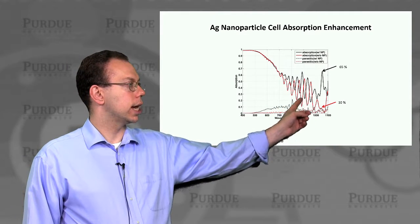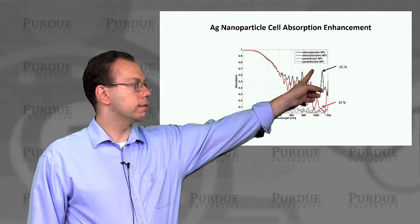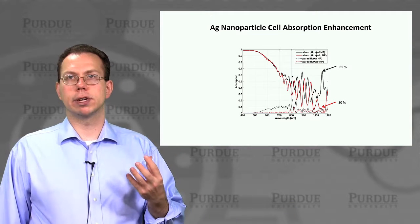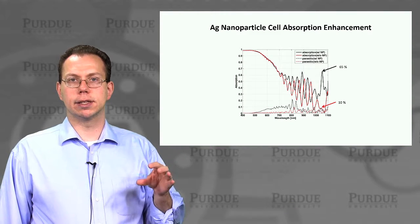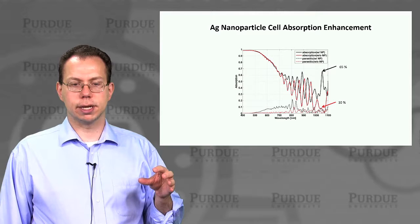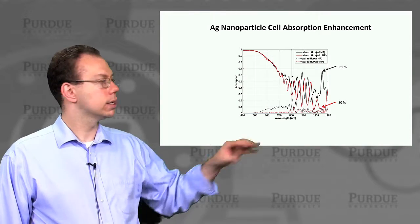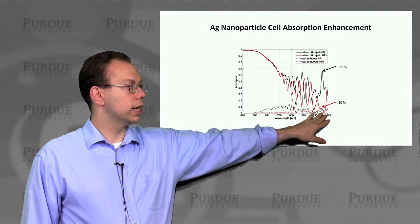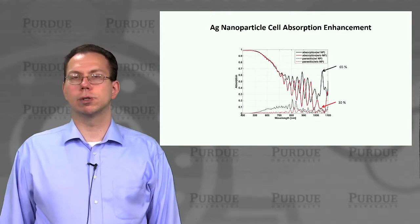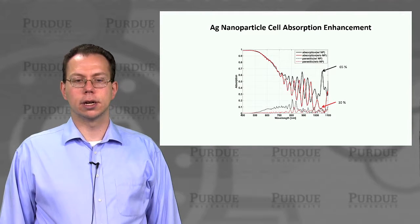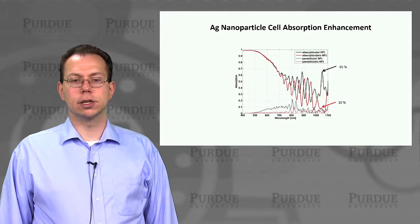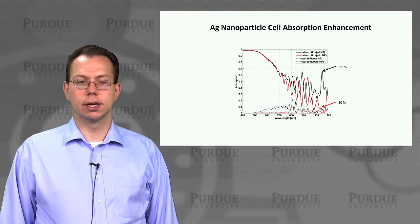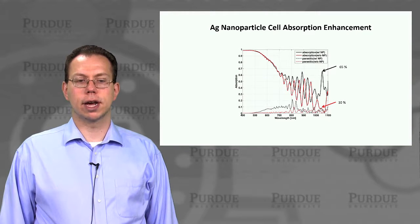With the nanoparticle we can have absorption up to 65% at wavelengths very close to the band edge, because of this extraordinary field enhancement and confinement. Whereas without this sort of light trapping, it's about almost an order of magnitude weaker absorption. So you basically increase from 10% up to 65% with this sort of nanoparticle.